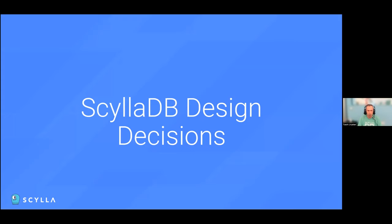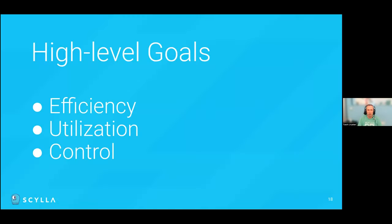So what are the goals of Scylla's design, originally built around eight years ago but still standing today? Efficiency, utilization, and control. Efficiency translates to throughput and latency. Utilization means maximizing the usage of every CPU and every core on the machine. And control means setting your own priorities for CPU usage, data, storage usage, and network usage.